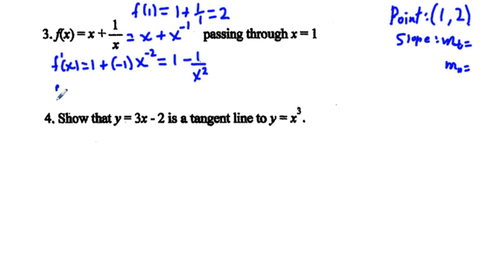And f'(x) is equal to the derivative of x is going to be 1. And then plus, we multiply this negative 1 out front. And we have x to the negative 2 power, which is going to be 1 - 1/x². And f'(1), which is going to be the slope of our tangent line, is going to be 1 - 1/1², which equals 1 - 1 or 0. So m sub t is equal to 0.